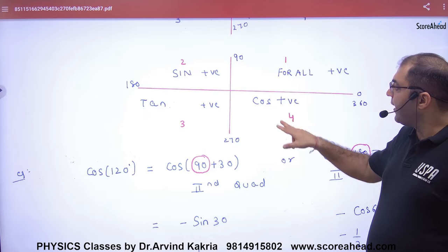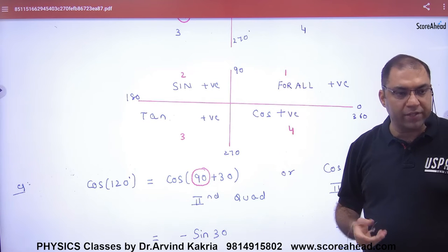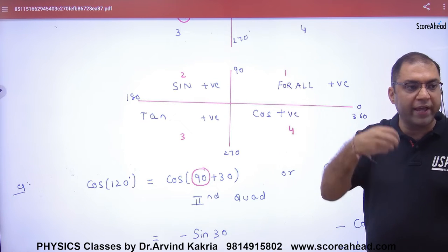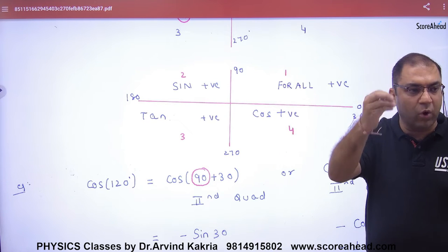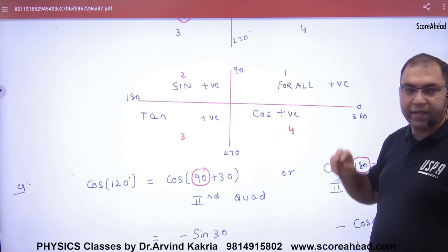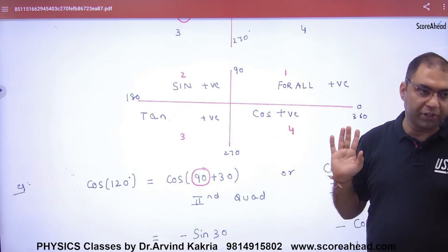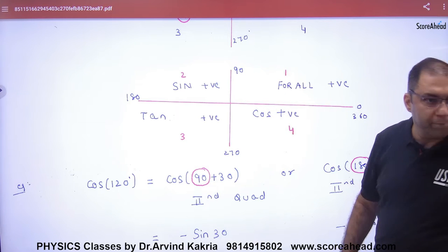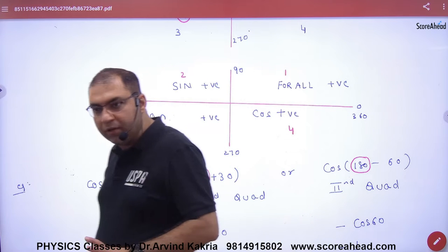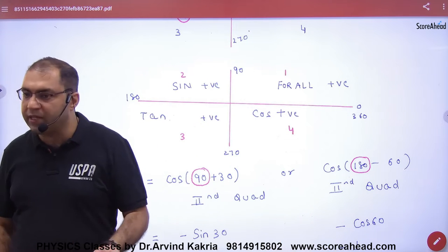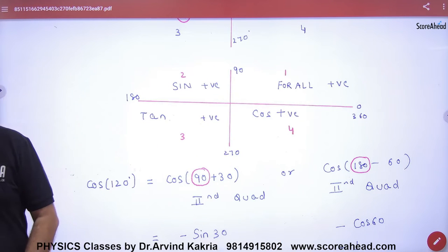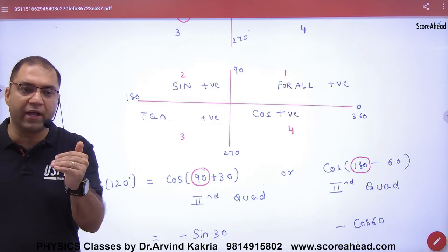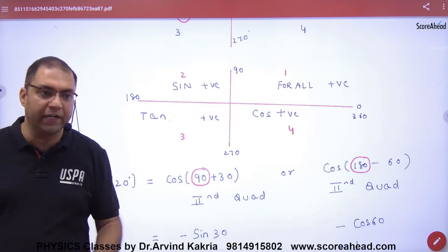And if you have an angle between 0 and 90, like 60 degrees, then sin, cos, and tan — all of them will be positive. So the coordinate system tells you whether the final answer will be positive or negative.